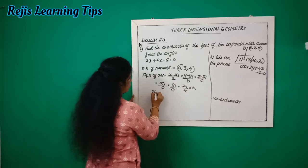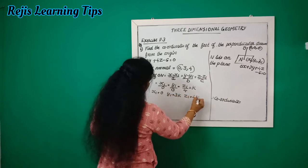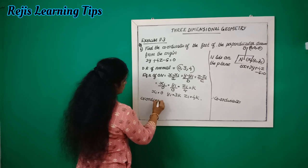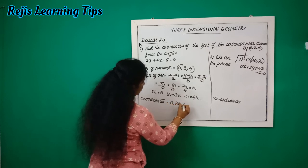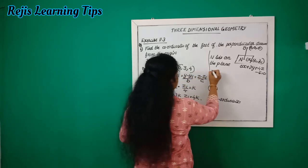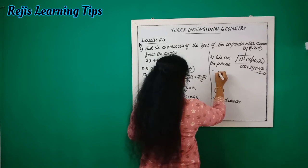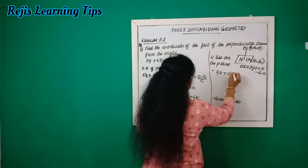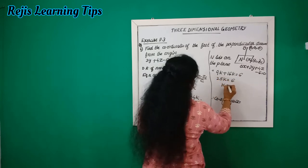So x1 equals 0, y1 equals 3k, z1 equals 4k. The coordinates of the foot of the perpendicular are (0, 3k, 4k). Since N lies on the plane, substituting: 0 plus 9k plus 16k equals 6, so 25k equals 6, therefore k equals 6 by 25.